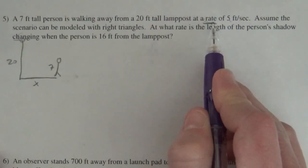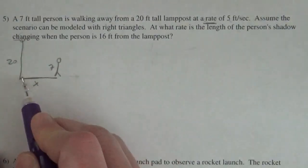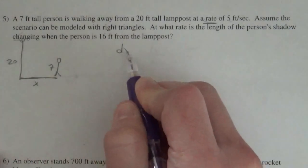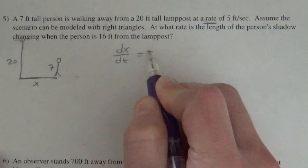So whenever they give us a rate they're giving us a derivative, so the rate at which this is increasing, dx/dt, is five.